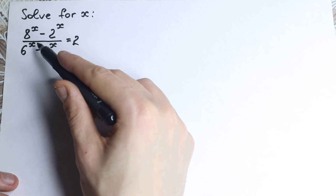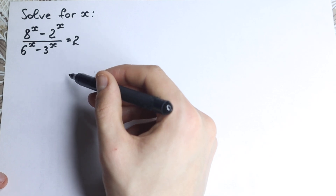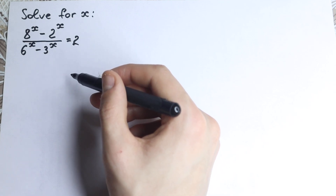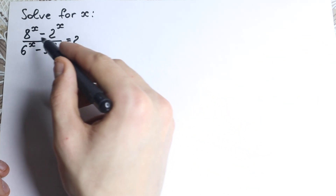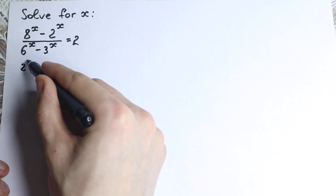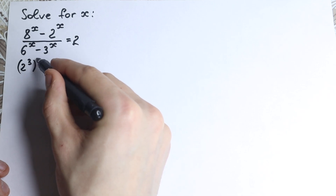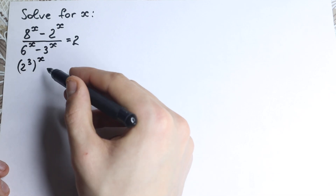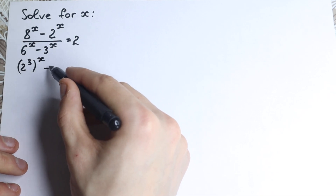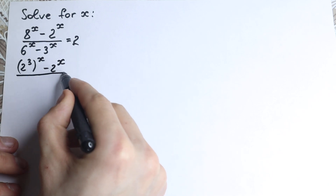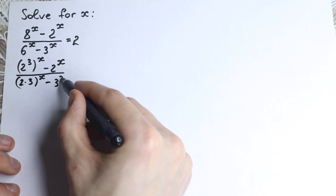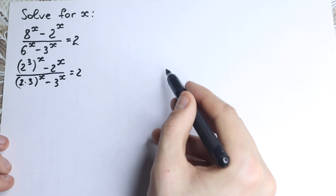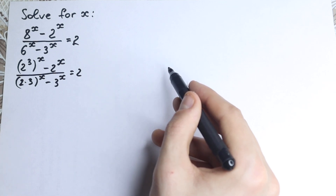First of all, we have all different bases — 8, 2, 6, 3 — so that's not good for us. We need to create the same bases. This 8 and 2 are great because we can easily write 8 as 2 cubed. So we have 2 cubed to the power x, minus 2 to the x. And let's write 6 as 2 times 3, so we have 2 times 3 to the power x, minus 3 to the power x, equal to 2.